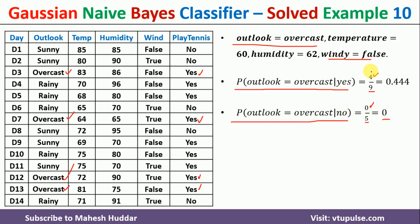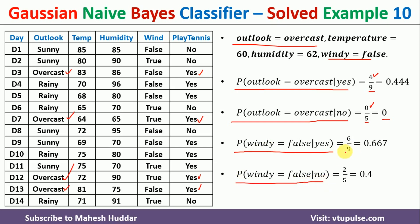For wind equal to false, we calculate probability of wind equal to false given yes and probability of wind equal to false given no. Given yes there are 9 examples and given no there are 5 examples. Wind equal to false appears 6 times in yes examples, so it is 6 by 9. In no examples, wind equal to false appears 2 times, so it is 2 by 5.